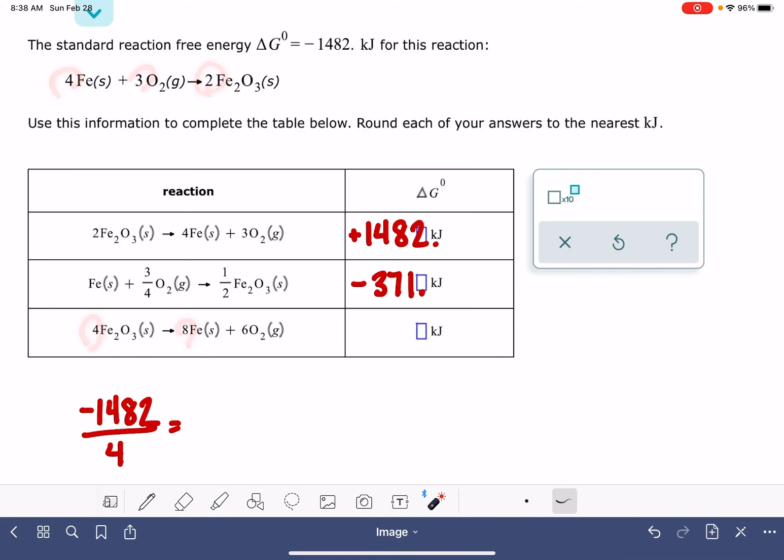Everything has been multiplied by two. So for this delta G value, we're going to change the sign from negative to positive. And since we multiplied all the stoichiometric coefficients by two, we're going to do the same thing to our value of delta G. We'll multiply it by two as well. This will give us a positive 2964 kilojoules, and now we'll get started.